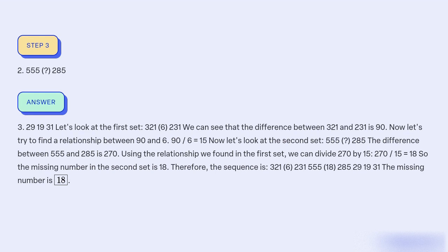Using the relationship we found in the first set, we can divide 270 by 15. 270 divided by 15 equals 18, so the missing number in the second set is 18.